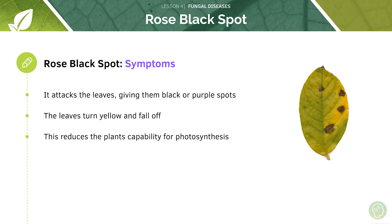If leaves are dropping off the plant, there's going to be less surface area for photosynthesis to occur, and therefore less net photosynthesis is going to be occurring in the plant.